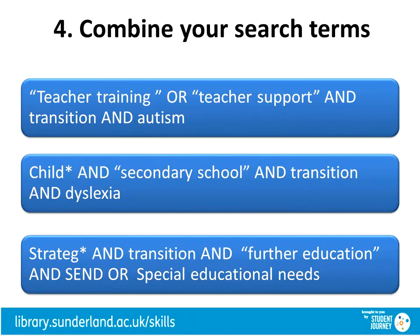Once you have a range of search terms, how you combine them will also have an effect on the results retrieved. This is step four. Here are some examples. I've taken some of the search terms from the previous slide and combined these together using AND, OR, and NOT. I've also used phrase searching and truncation where appropriate. If you want to know more about these, there's a video you can watch, or it's summarised on our library help sheet. You do not need to use all of the features in every search you do, just the ones where you think it would help.